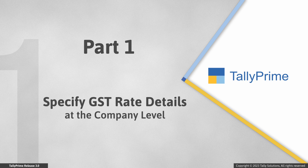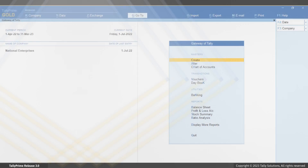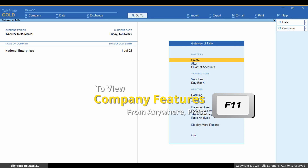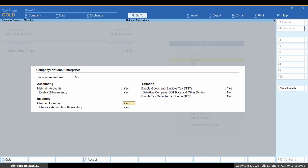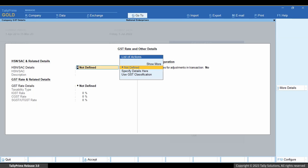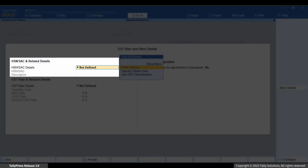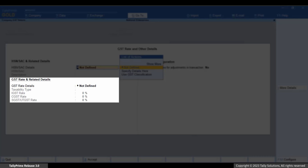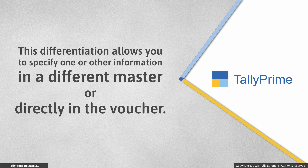First, let us see how to specify GST Rate at the company level. Press F11 and enable 'Set or Alter Company GST Rate and other details.' There are separate rows for HSN or SAC details and GST Rate details. This differentiation is applicable in all the masters and vouchers, providing flexibility to specify one or the other information in a different master or directly in the voucher as per your requirement.